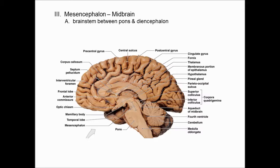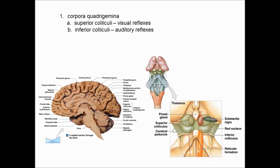One of the prominent structures in the midbrain is on the superficial superior surface. In cross-section, you can see four little swollen areas called the corpora quadrigemina, which means four bodies — literally four little globular structures on the surface just beneath the cerebellum. The two superior colliculi function for visual reflexes, and the inferior colliculi function for auditory reflexes and localization of sound.